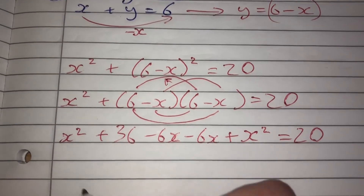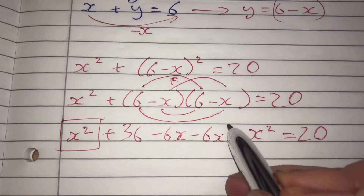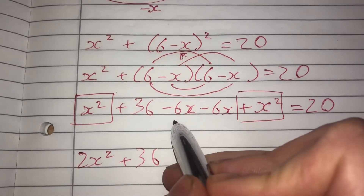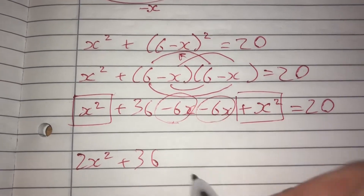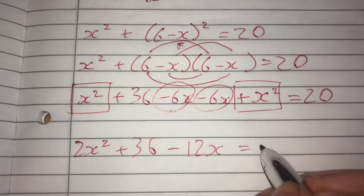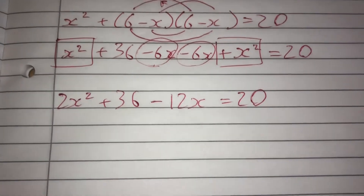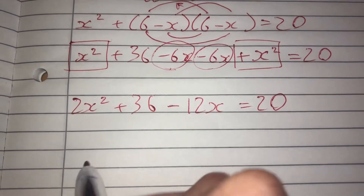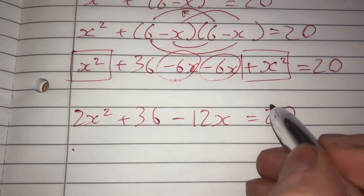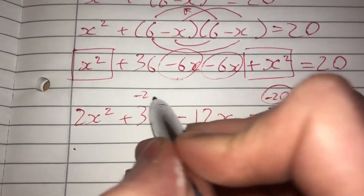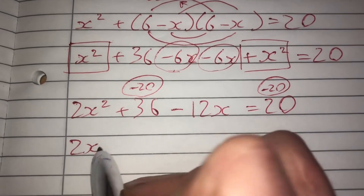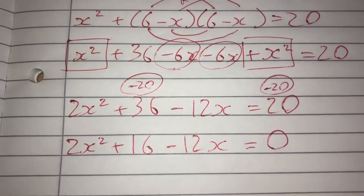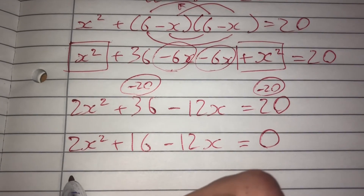Collecting like terms: x squared plus x squared gives 2x squared, minus 6x minus 6x gives minus 12x, plus 36 equals 20. Now I get everything to the left hand side to make the right hand side equal to zero, then factorize and solve. Subtracting 20 from both sides gives 2x squared minus 12x plus 16 equals 0.